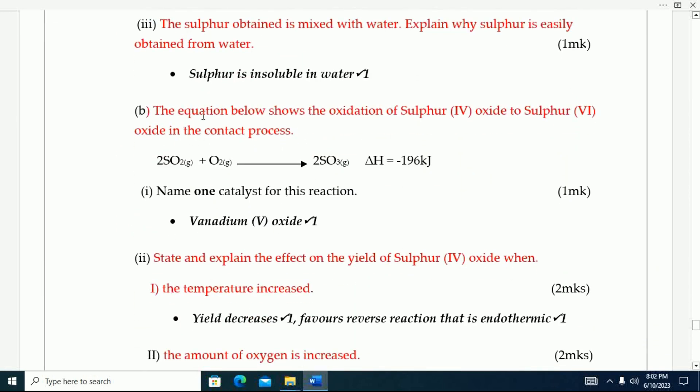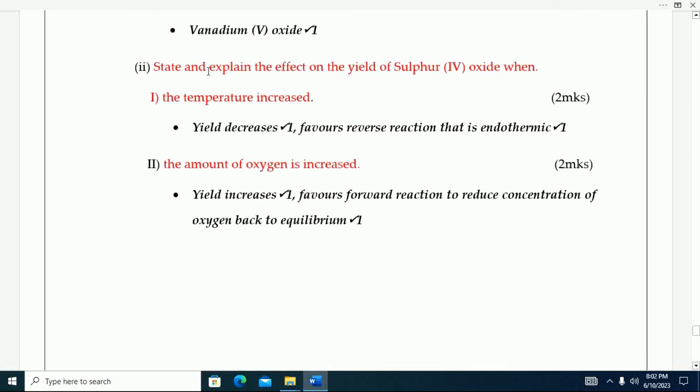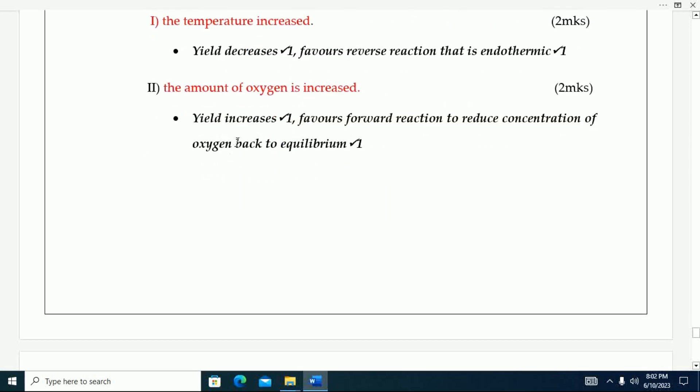The equation below shows the oxidation of sulfur dioxide to sulfur trioxide in the contact process. This is how that equation is written. Name the catalyst for this reaction. That one is vanadium pentoxide. State and explain the effect on the yield of sulfur trioxide when the temperature is increased. Yield decreases. This one favors reverse reaction that is endothermic. When the amount of oxygen is increased, yield increases, favors forward reaction to reduce concentration of oxygen back to equilibrium.